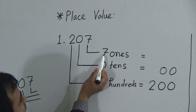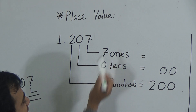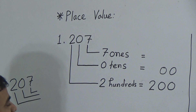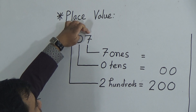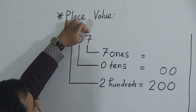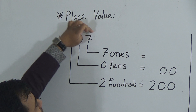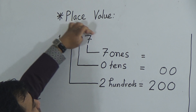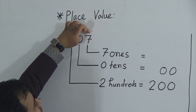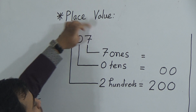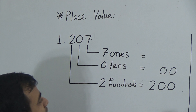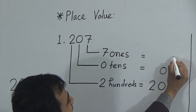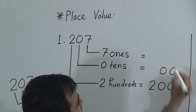Now look, my dear students. This 7 ones means 7. After 7, is there any digit? After 7, there is no digit — that means we will use no zeros here. That's why we write down 7 on the right side.